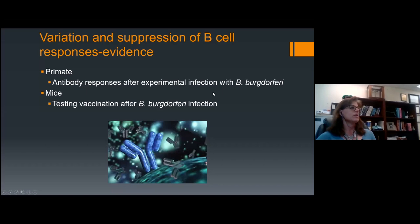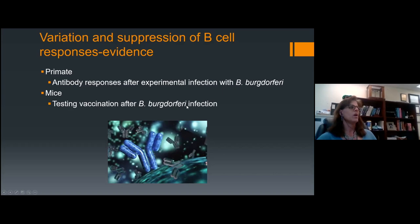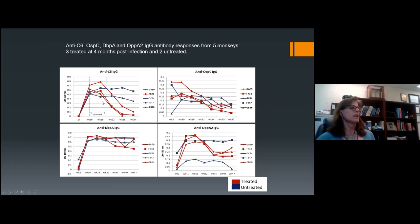Some of the evidence about the variation and suppression of B cell responses comes from both primates and mice. We performed a longitudinal assessment of antibody responses to many different diagnostic antigens following experimental infection and treatment. The goal was to identify a combination of antigens that could indicate infection at all phases of disease and the response to antibiotic treatment. Here are the antibody responses of five rhesus macaques infected with Borrelia burgdorferi to four different antigens: C6, OspC, DbpA, and OppA2.